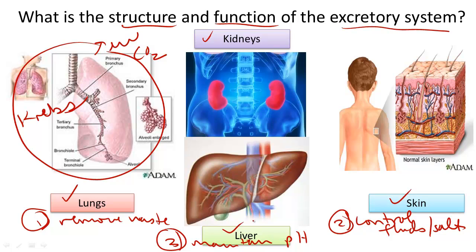Next, the liver does not excrete any substances from the body, but it is the location where amino acids are deaminated and where it forms something called urea.